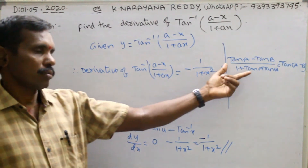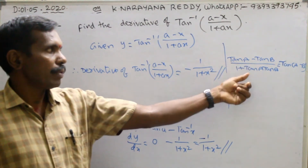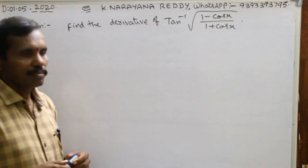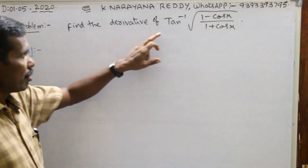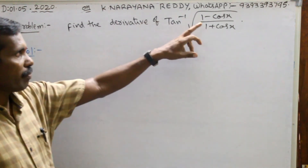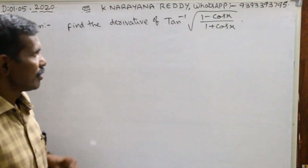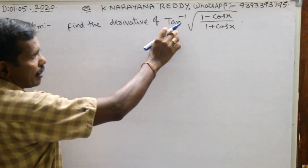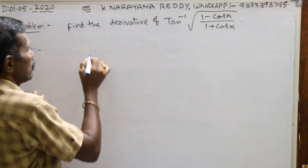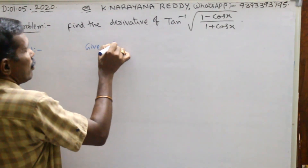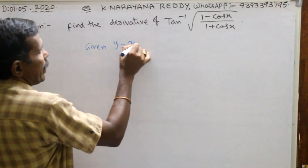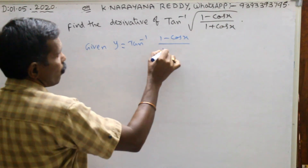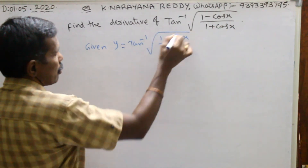Here we are using the formula: tan a minus tan b by 1 plus tan a tan b equals to tan of a minus b. See the next problem: find the derivative of tan inverse of root of 1 minus cos x by 1 plus cos x. Given y equals to tan inverse of root of 1 minus cos x by 1 plus cos x.